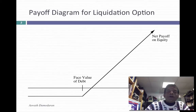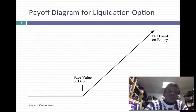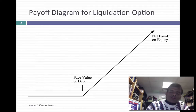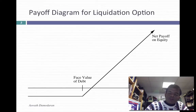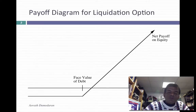Let me set up the payoff diagram. This option is the option to liquidate a business. You're the equity investor running a business, and you have the option to liquidate it. If you do liquidate, you get the liquidation proceeds — the value for the business. The first claim on those proceeds goes to your lenders, who get the face value of the debt back. If there are any proceeds left over, you keep the difference as the equity investor.